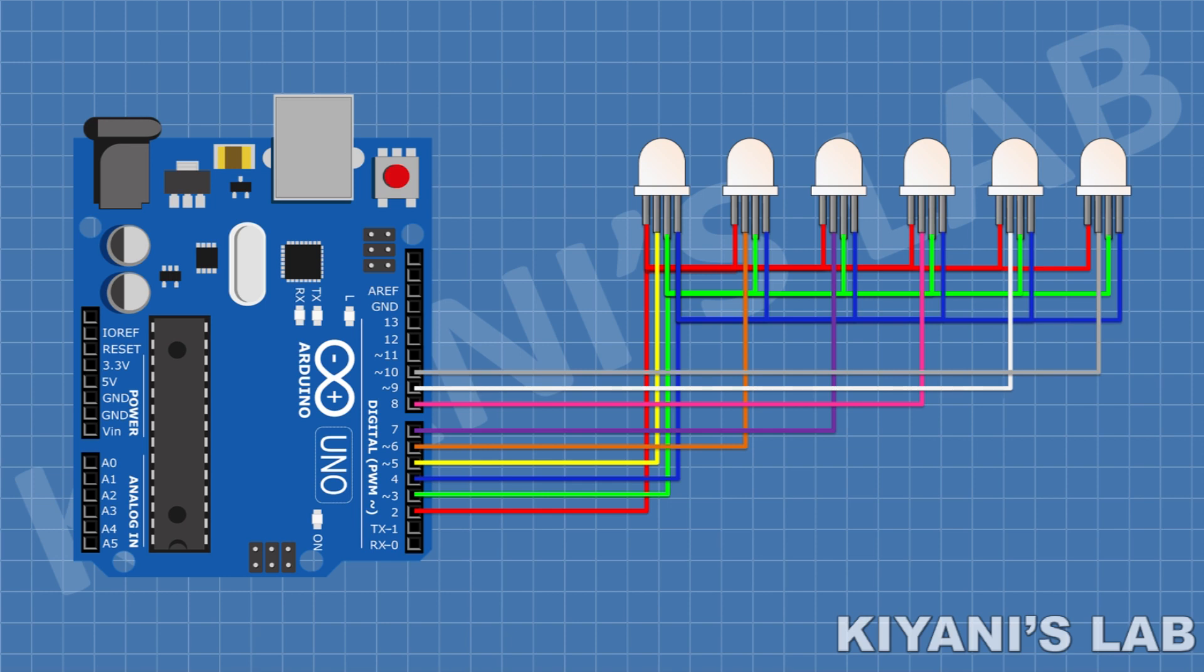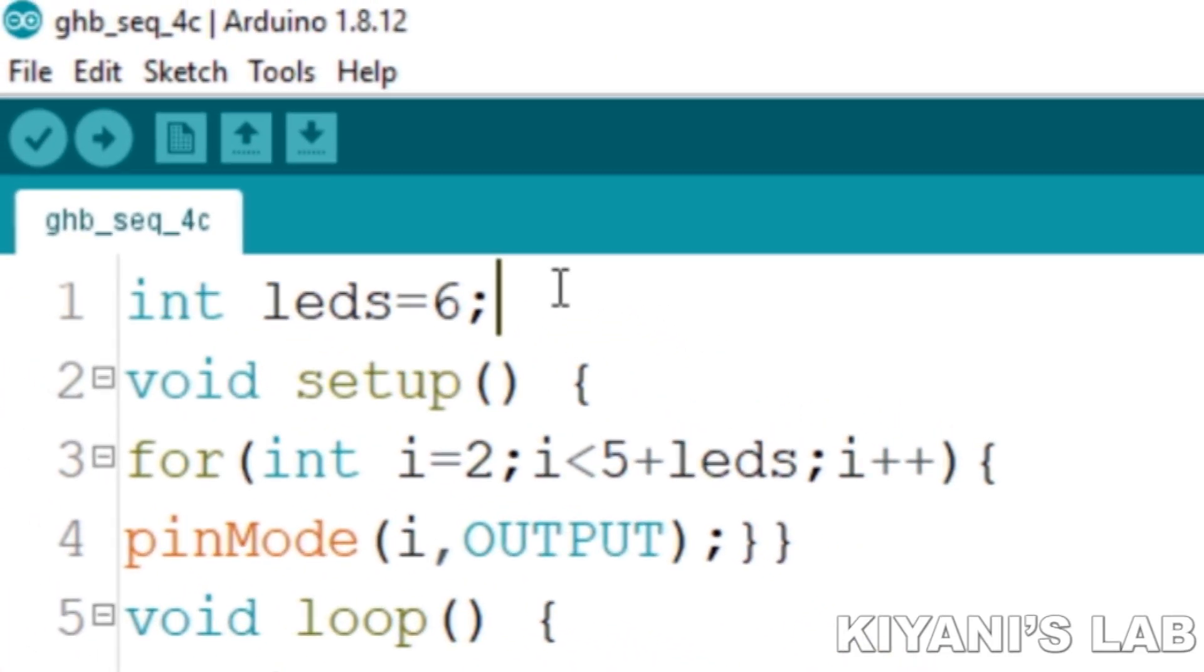Now let's see the code. With this circuit you can use from 1 to 9 LEDs. I am using 6 LEDs, so I have written 6 here for 6 LEDs. You can change this number to the quantity of your LEDs. If you are using 3 LEDs then write 3, and if you are using 9 LEDs then write 9 here.